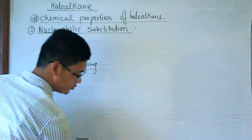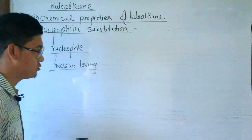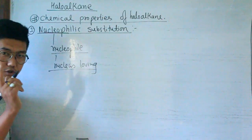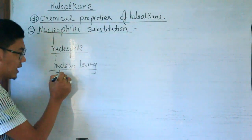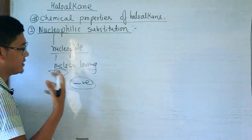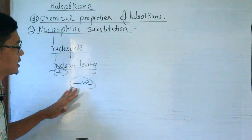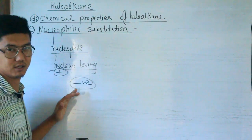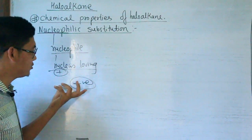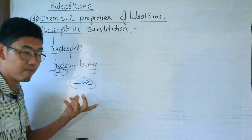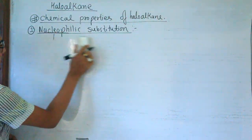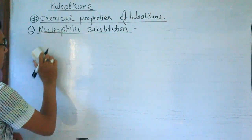Nucleus-loving — what does that mean? The nucleus contains protons and neutrons. Protons are positively charged. So nucleus-loving means it loves positive charge, which implies the nucleophile itself is negatively charged. Generally, nucleophiles are negatively charged chemical species.